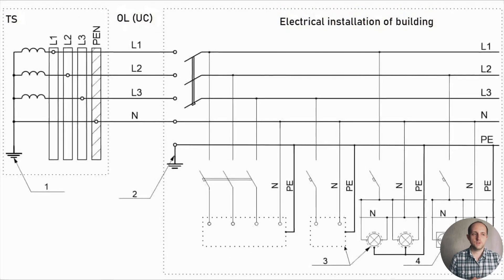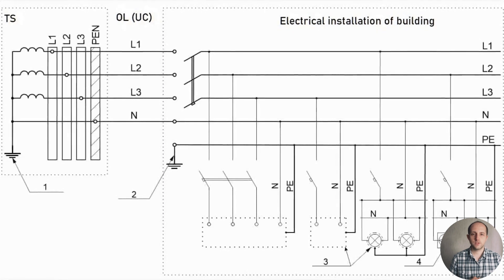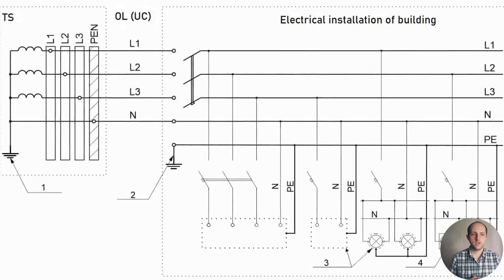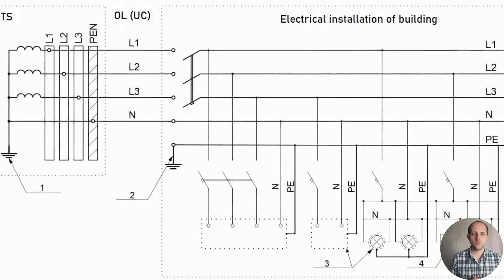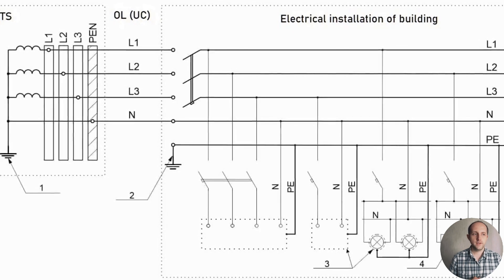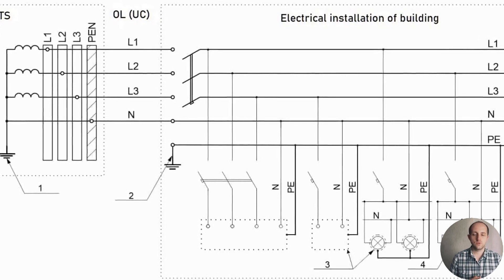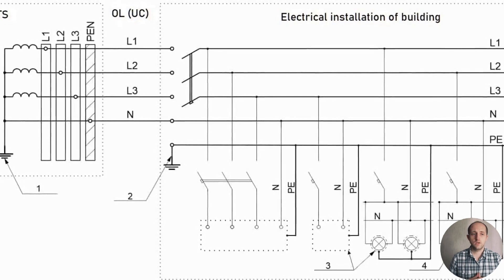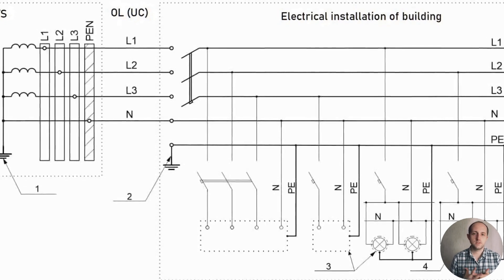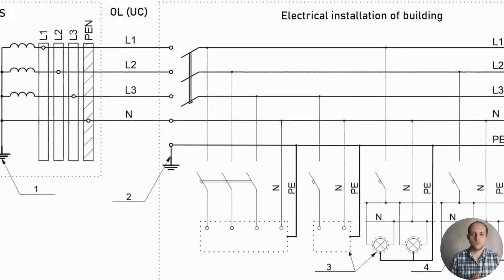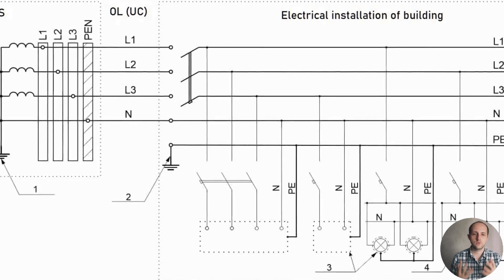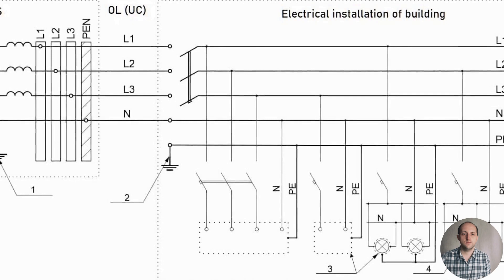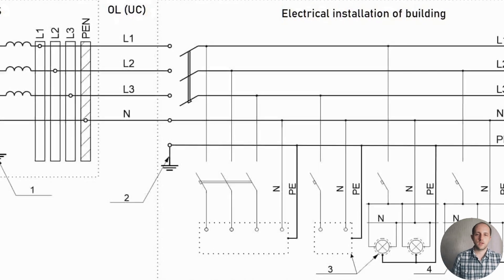In the TT type of system earthing, one of the live parts of the power supply — usually the neutral of the transformer — is earthed. The exposed conductive parts of the electrical installation of a building are also earthed for protective earthing. The earth electrode of this earthing arrangement must be electrically independent from the power supply earthing arrangement.